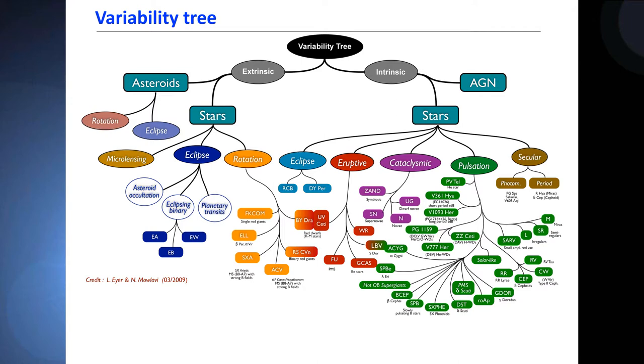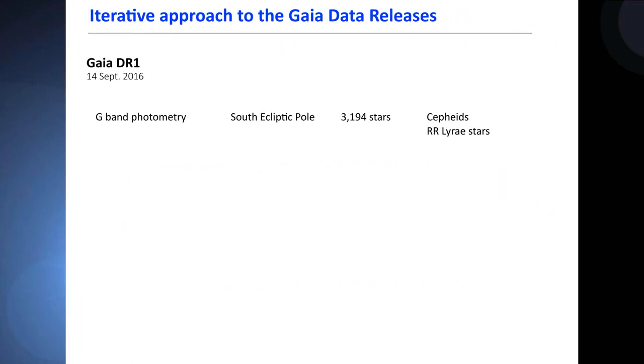In the data releases, there is an iterative approach. In September 2016, the first data release used the G-band photometry only for a region of the sky at the south ecliptic pole covering the LMC. We output 3,000 Cepheids and RR Lyrae. It was like a showcase.